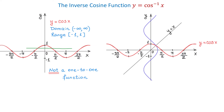So what we can say about the cosine function is that on the interval from negative infinity to positive infinity, this function does not have an inverse.